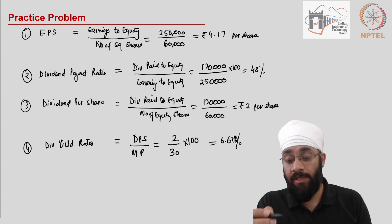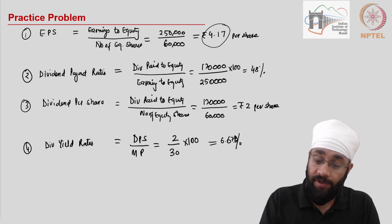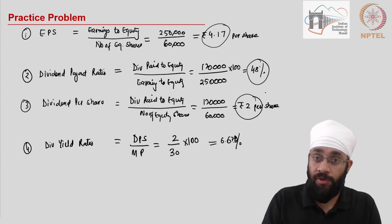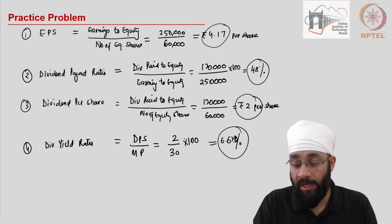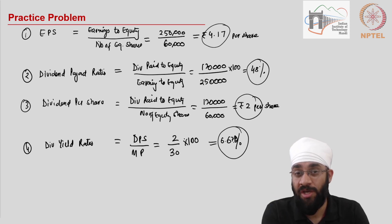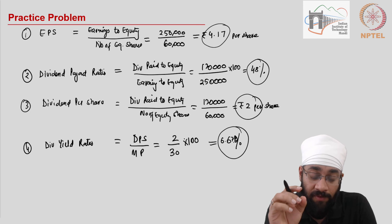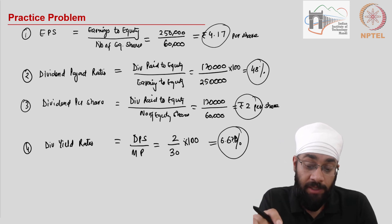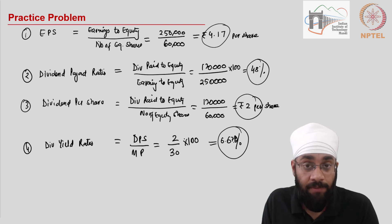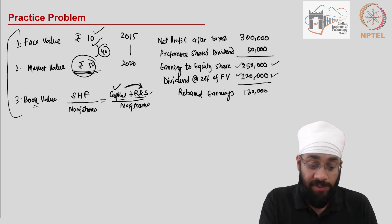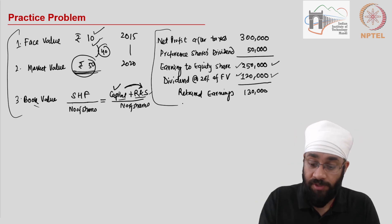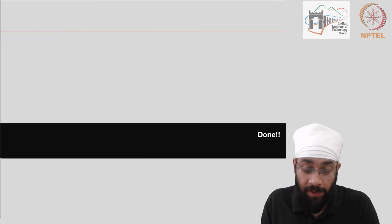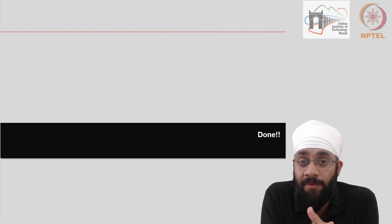To summarize: the company earns rupees 4.17 per equity share, pays out 48% of that as dividend — which is rupees 2 per share — and a new investor buying at rupees 30 per share can expect a 6.67% return. In this video we covered these four profitability ratios and also learned the concepts of face value, market value, and book value, as well as how profit is distributed among stakeholders and how retained earnings arise.